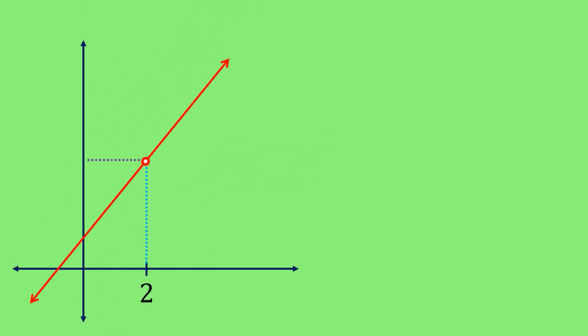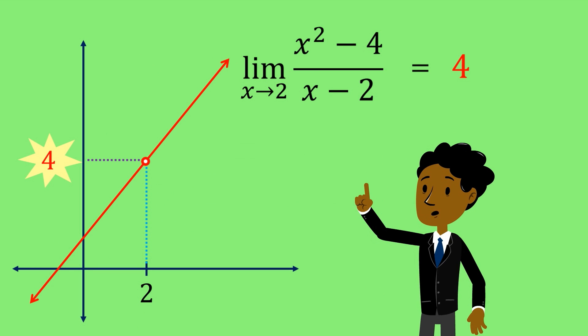Despite the hole, the behavior of the function leading up to it is the same. Since the behavior is the same, we still say that the limit of the function as x approaches 2 is 4. Even though it never actually gets there.